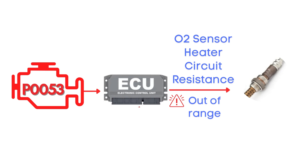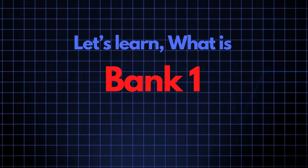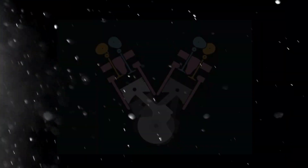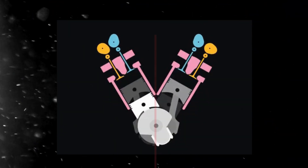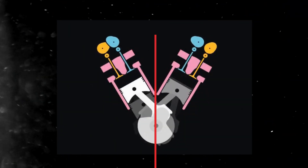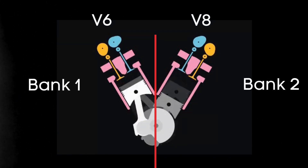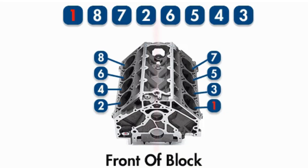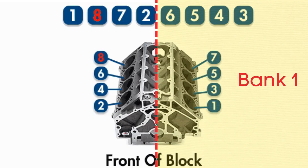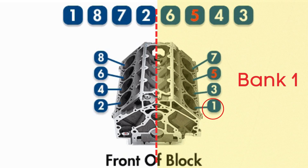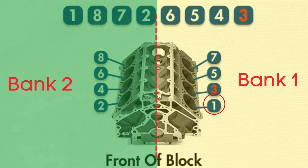Specifically, we're talking about the oxygen sensor heater circuit for Bank 1, Sensor 1. Now let's learn what Bank 1, Sensor 1 means. In engines with multiple cylinder banks like V6 or V8 engines, you'll have two sides or banks of cylinders. Bank 1 typically refers to the side of the engine where cylinder 1 is located, and Bank 2 is on the opposite side.